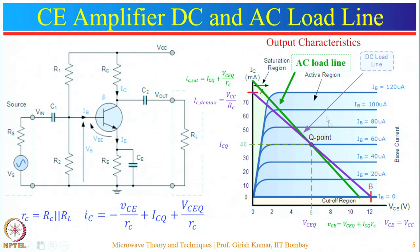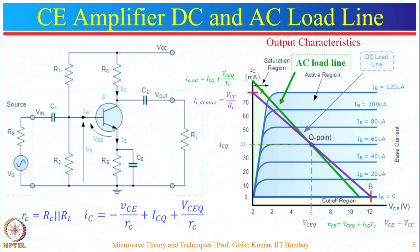The next question is where to place the operating point. In class A power amplifiers, the output current and voltage swing should be very large, so the operating point should provide maximum output power without distortion. It is suggested to choose the operating point in the middle of the AC load line. If chosen too high, the positive cycle may get clipped — saturation clipping. If too low, the negative cycle may clip — cutoff clipping.